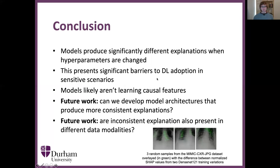To conclude, we've shown that models produce significantly different explanations when hyperparameters are changed, and this will present significant barriers to deep learning adoption in sensitive scenarios where transparent algorithms are imperative. We hypothesize that this probably means models likely aren't learning causal features. In the future we want to investigate developing model architectures that produce more consistent explanations and further the study by looking at different data modalities — in this paper we focused on images, but what about tabular data or time series data, for example.